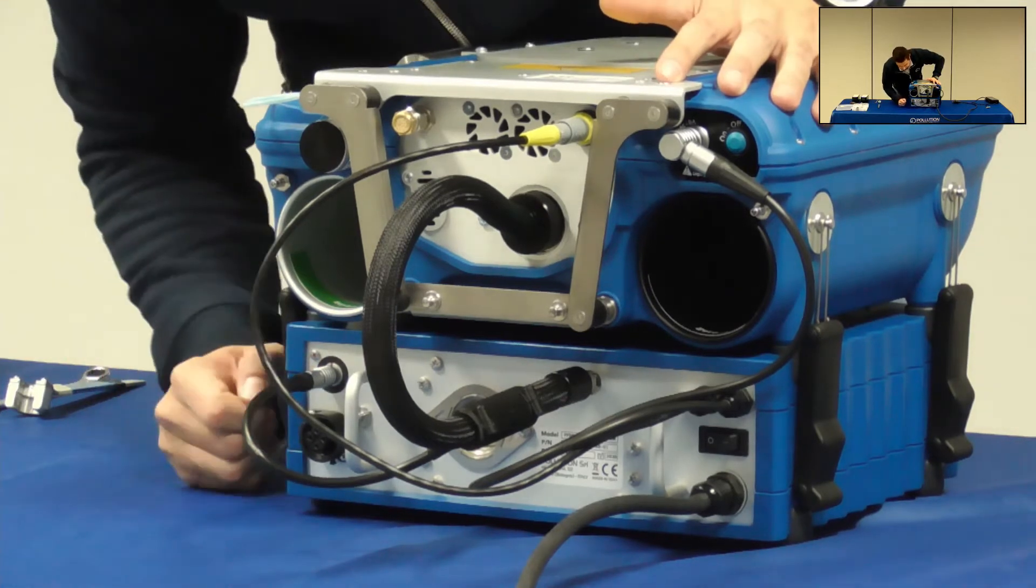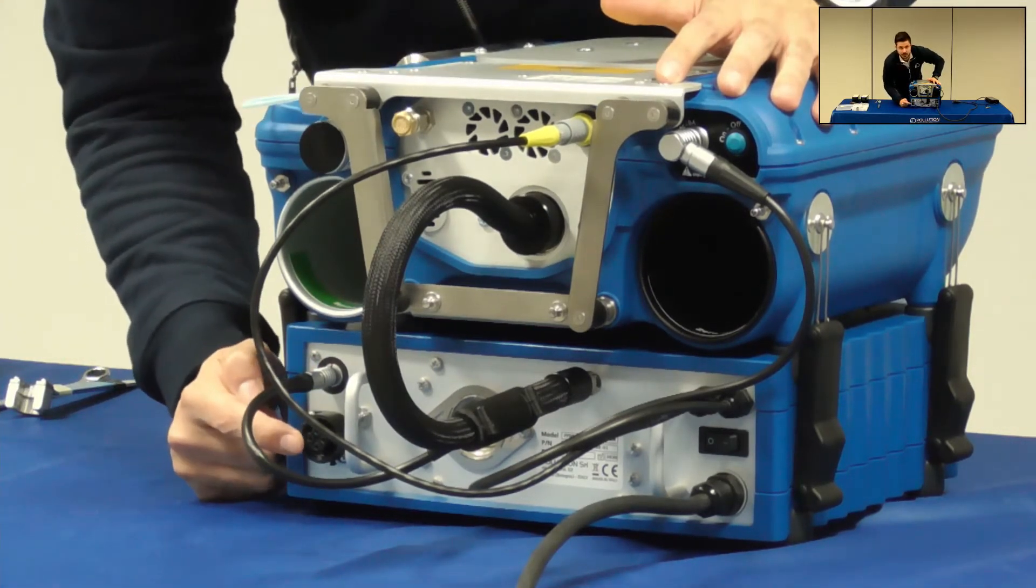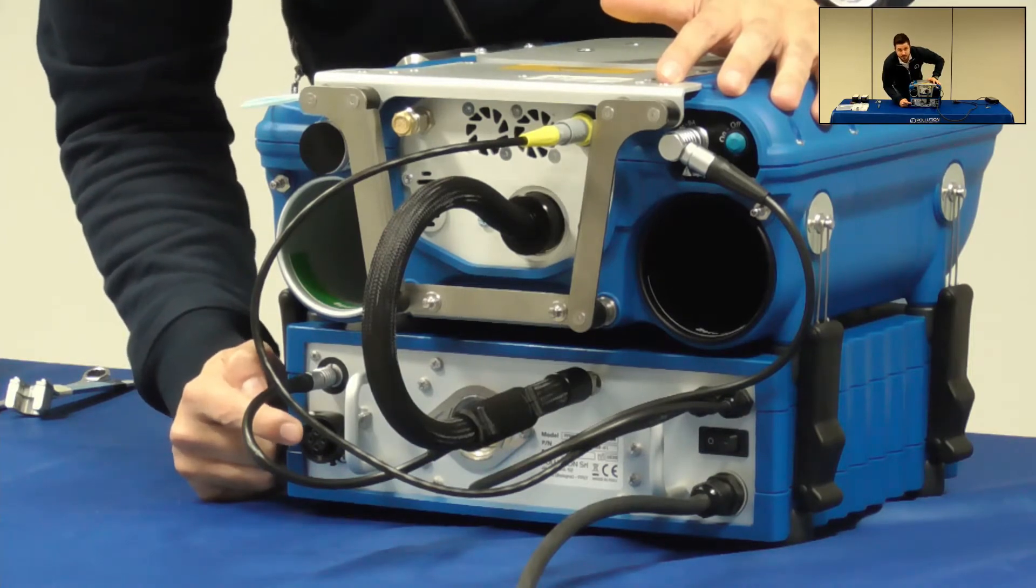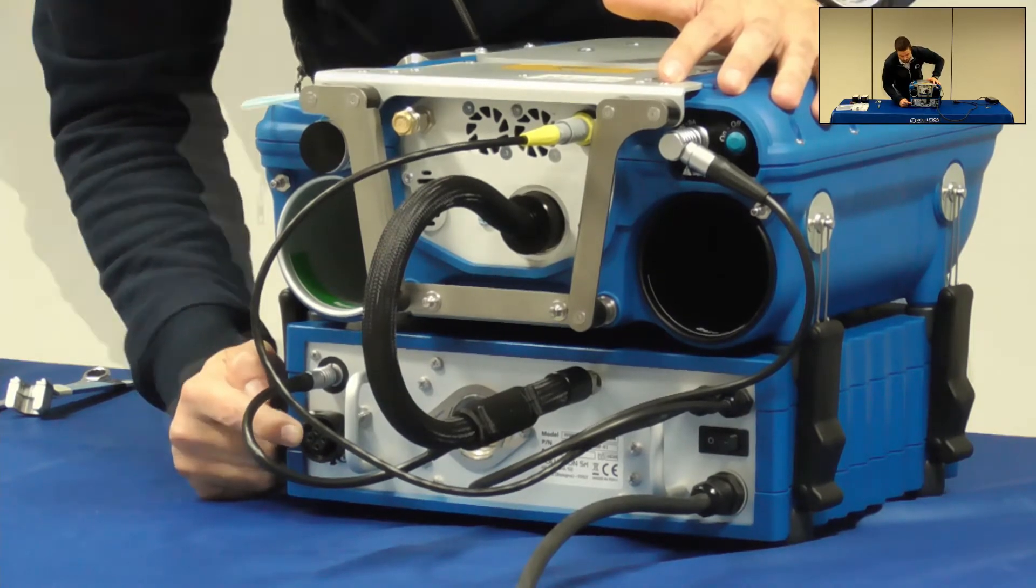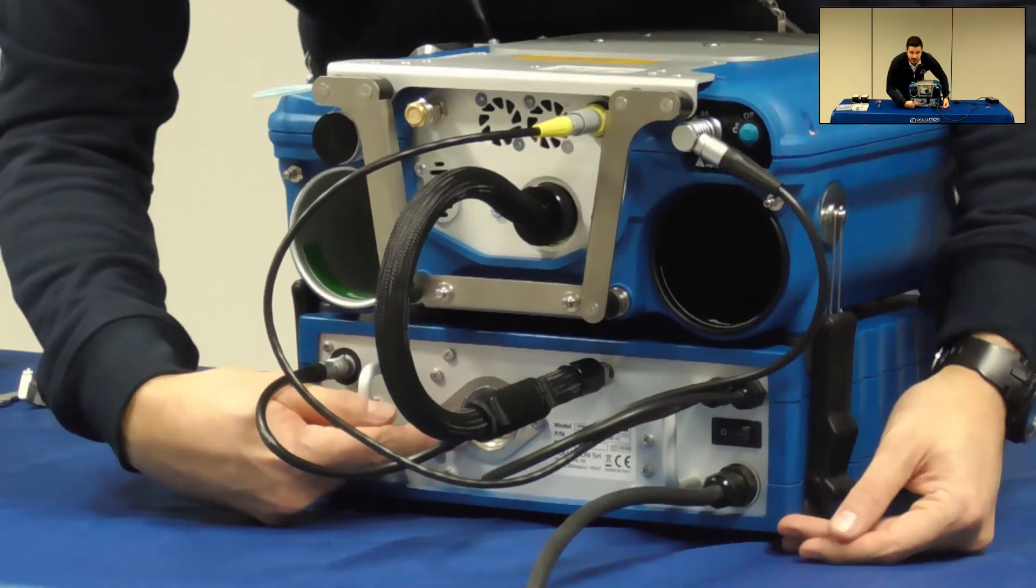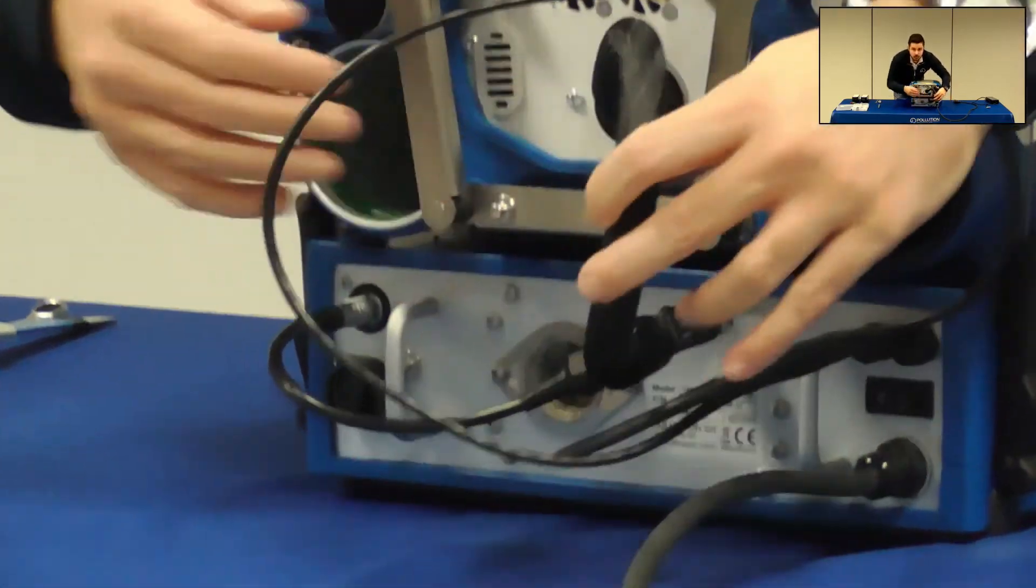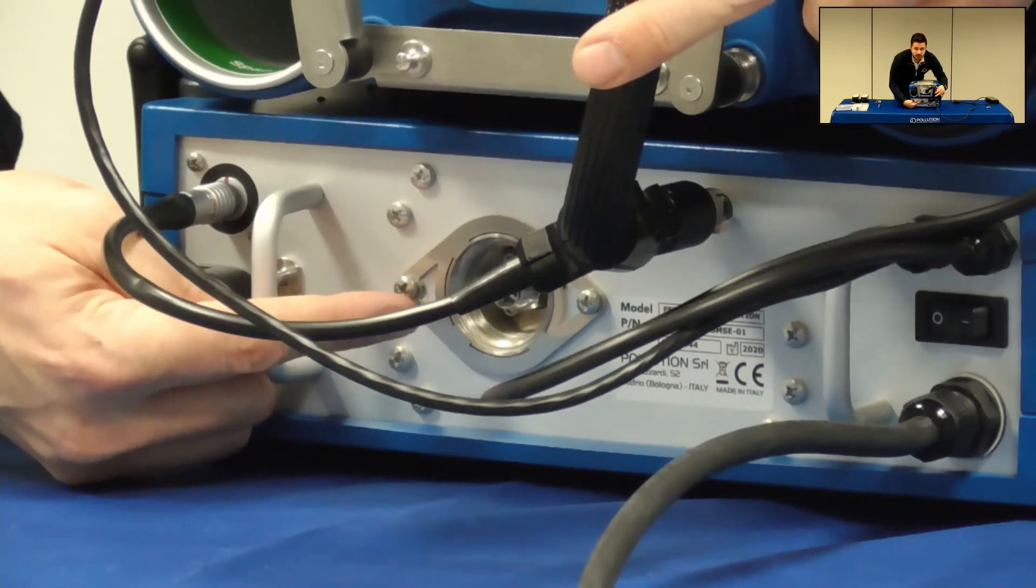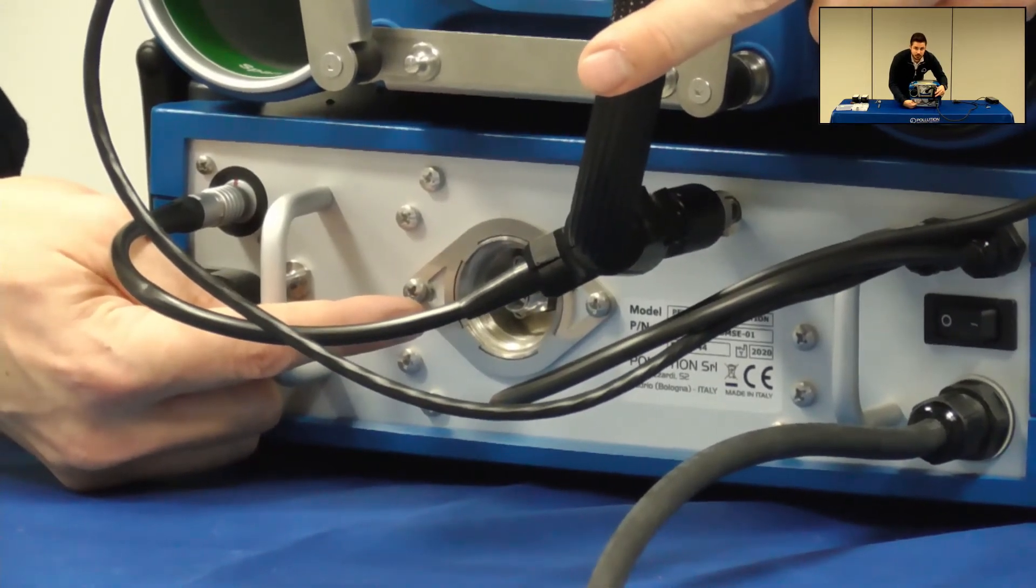This plug here on the bottom of the docking station serves to power up the heated sampling line. Here in the center of the docking station you have the sample inlet for the stack gas with its dedicated filter.